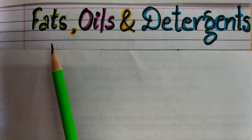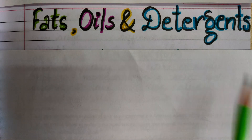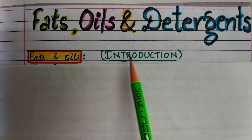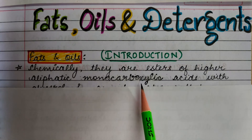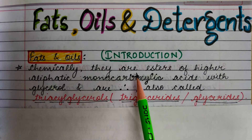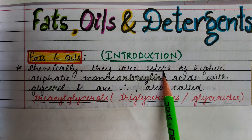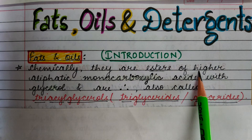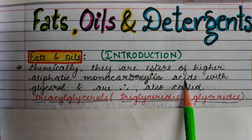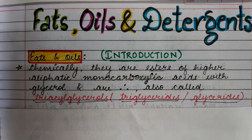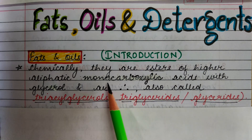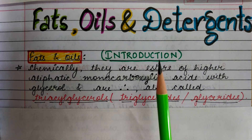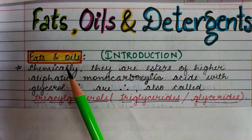Chapters: fats, oils, and detergents. In the first part of the chapter we will cover fats and oils. Introduction: chemically, fats and oils are esters made up of higher aliphatic monocarboxylic acids and glycerol. When monocarboxylic acids react with glycerol to form esters, those esters are called fats and oils.